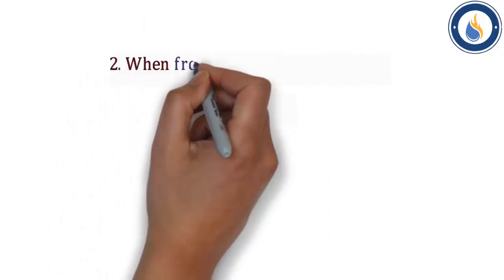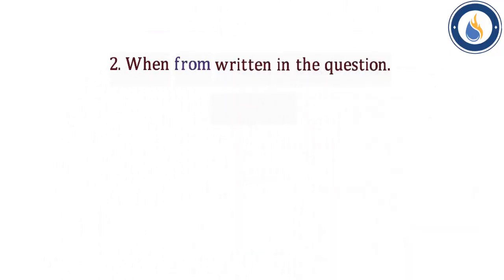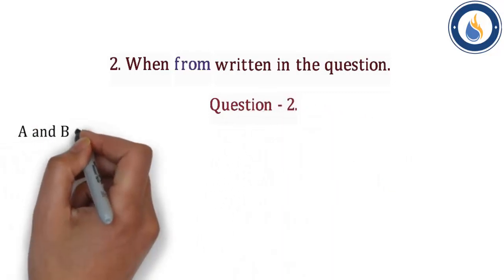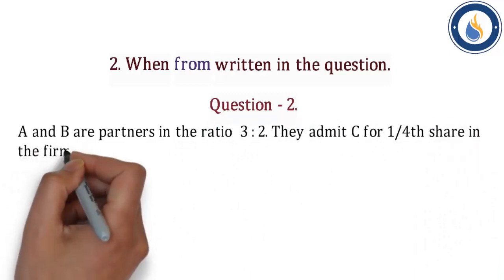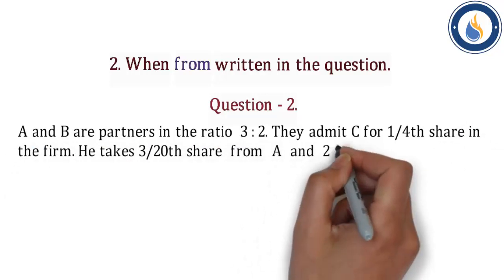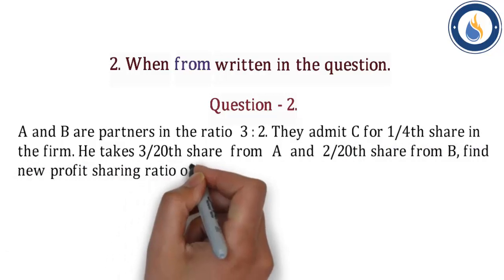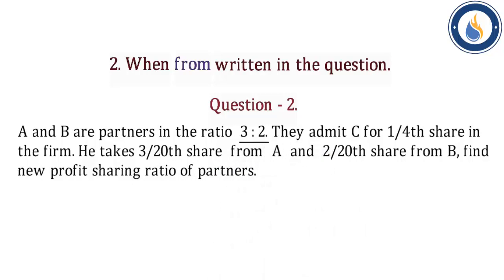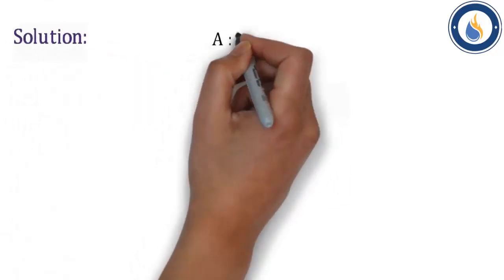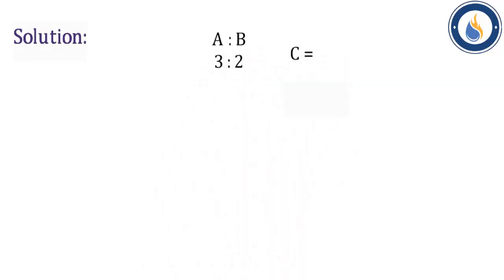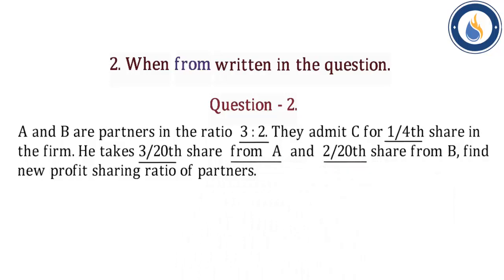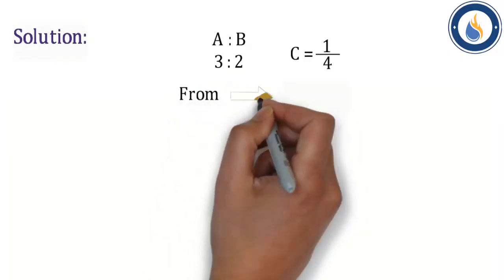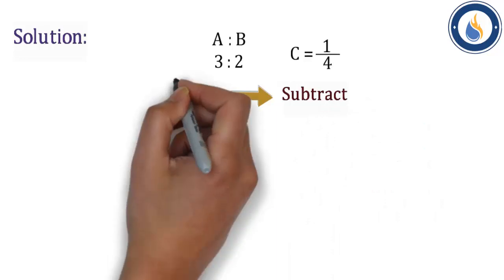Second condition — When 'from' is written in the question. Question 2: A and B are partners in the ratio of 3:2. They admit C for one-fourth share in the firm. C takes 3/20 share from A and 2/20 share from B. Find new profit sharing ratio. When the question says 'from', we directly subtract from A and B. This point is important to note.